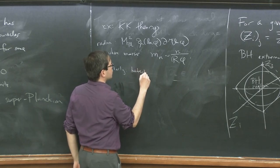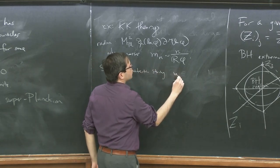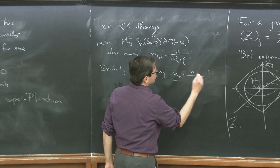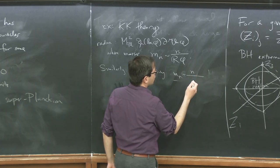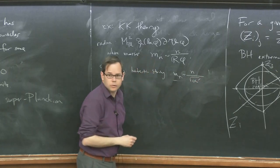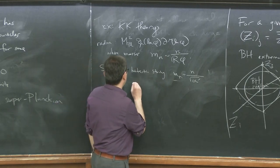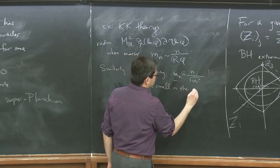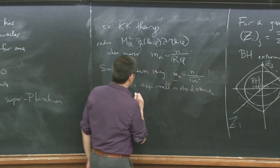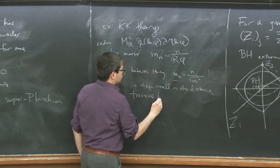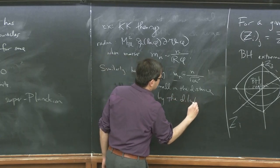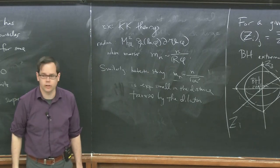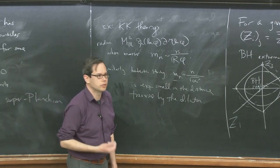Similarly for the heterotic string, we saw that masses roughly went like n divided by the square root of α', or n times the string mass scale — but that's exponentially small in the distance traversed by the dilaton, since α' in Planck units depends on g_string, which is exponential in the value of the dilaton.